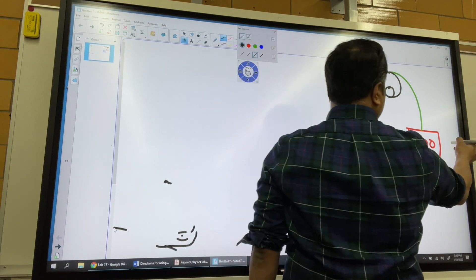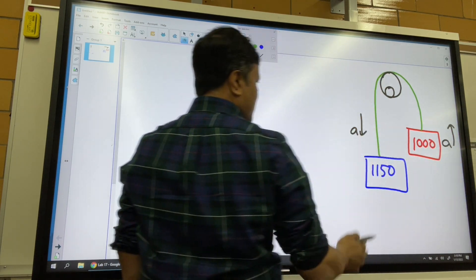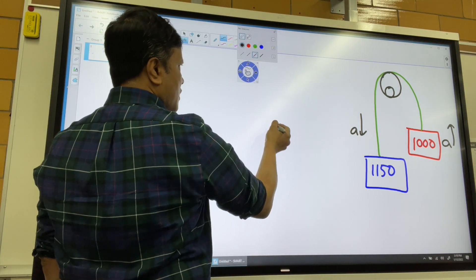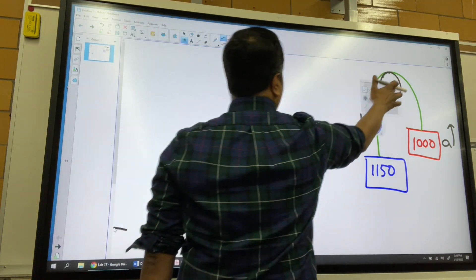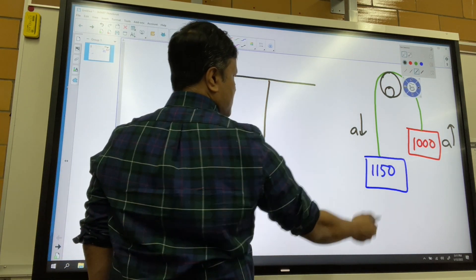This one is accelerating up. This one is accelerating down. Now we're going to draw a free body diagram. We always start with the free body diagram.